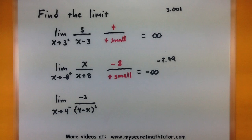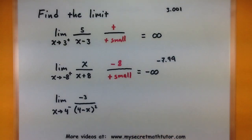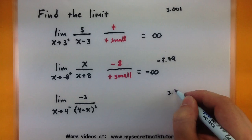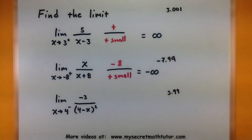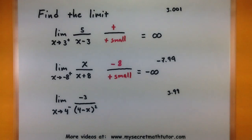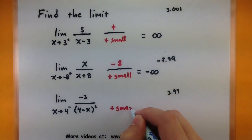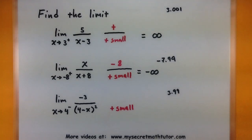Let's try one more. We have the limit as x approaches 4 from the left of negative 3 divided by (4 minus x) squared. If we try to use 4 for x, 4 minus 4 is 0, which is undefined. We're approaching 4 from the left, so values might be like 3.99. Taking 4 minus 3.99 gives a positive small value. Since we're squaring it, positive times positive gives another positive value, so the bottom is positive and small.